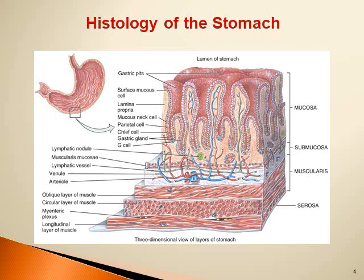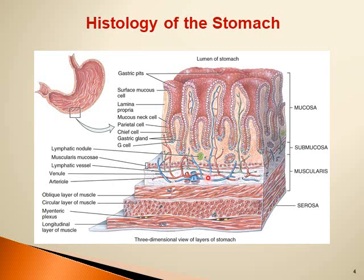Histologically, the wall of the stomach is composed of the four basic layers like other parts of the alimentary canal: the mucosa, the submucosa, the muscularis, and the serosa. The mucosa is relatively thick in the stomach because it contains the gastric glands, which open into the lumen through openings called gastric pits. The epithelium is composed of simple columnar cells. The submucosa is a dense connective tissue containing blood vessels, lymphatics, and the submucosal plexus.